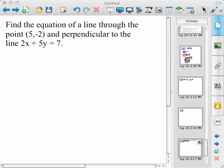Alright, in this video we're going to find the equation of a line through the point (5, -2) and perpendicular to the line 2x + 5y = 7.